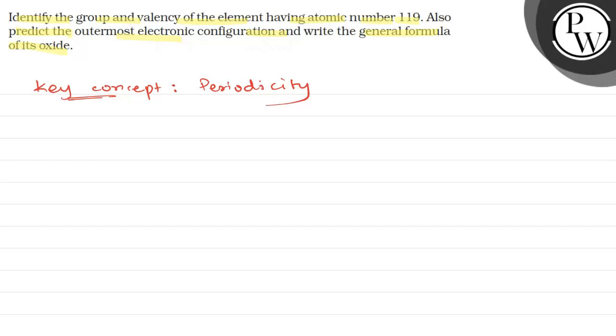Basically, here we have atomic number 119 element, where we need to predict the group and valency.